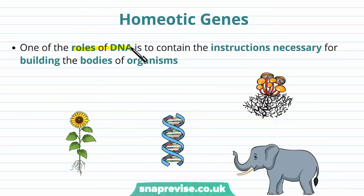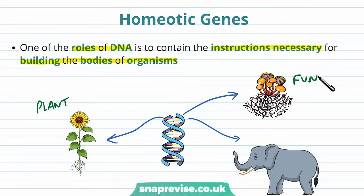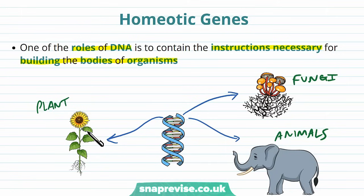One of the roles of DNA, apart from coding for proteins, is to contain the instructions necessary for building up the bodies of organisms. We know that DNA contains the genes to make the proteins that make up all the organisms we find. But if DNA just made all these proteins randomly, it would be a complete jumble and mess of cells and proteins. How do we make sure that plants have a flower at the top and leaves pointing out to the side? How do we make sure that elephants have a head at the front and four legs, and not a leg sticking out of its back? For all these different animals and other kingdoms too, DNA helps to instruct how the organism is built up.